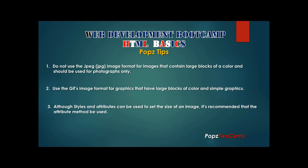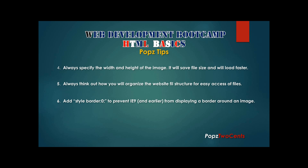Pop Tips: Do not use JPEG for images with large blocks of color — use it for photographs only. Use GIF for graphics with large blocks of color and simple graphics. Although styles and attributes can both set image size, the attribute method is recommended. Always specify the width and height of an image — it saves file size and loads faster. Always think out how you will organize your website file structure for easy file access. Add style border:0 to prevent IE9 and earlier from displaying a border around an image.